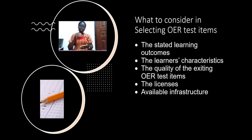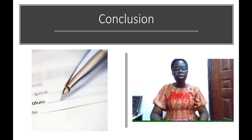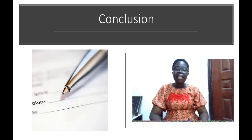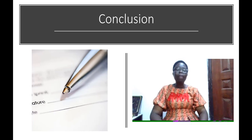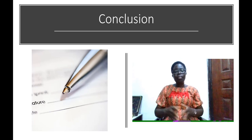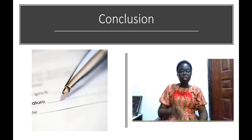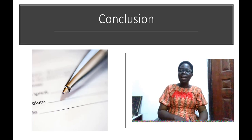In all, when choosing OER test items, ensure that you work with the license and the stated learning outcome, because when you do this it will help direct what you need to do. In conclusion, testing is quite interesting, especially when using OER, because there are so many standardized test items out there. Before you use them, ensure you work with the learning outcomes, look at the license, and make sure what you select meets the learning outcome. Thank you for listening.